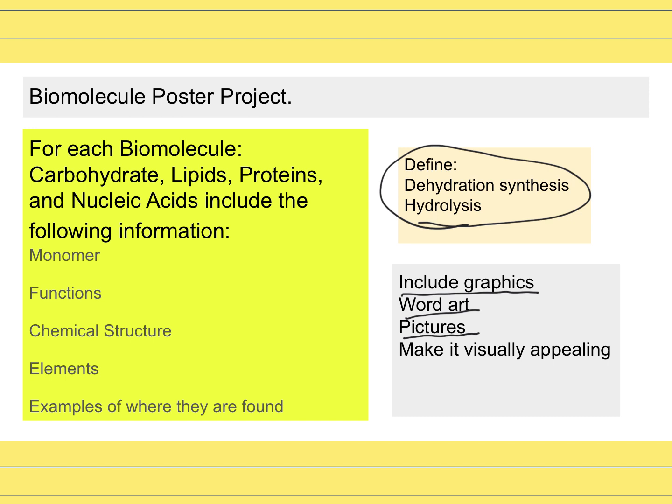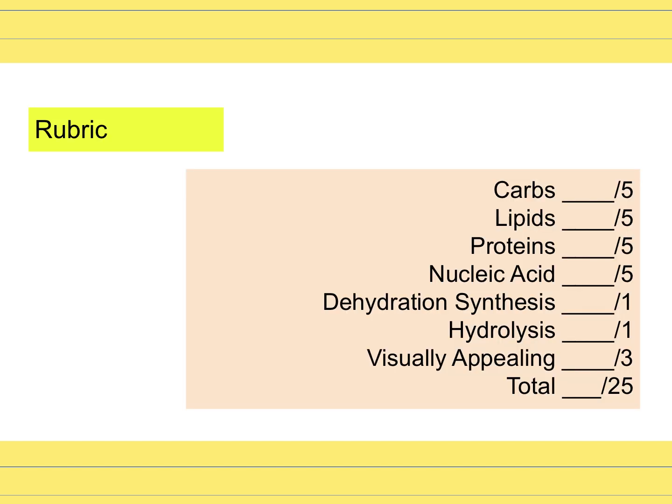You're going to be graded by the rubric on the next page. This will be a formative project. You'll get five points for having carbs, lipids, proteins, and nucleic acids, a point for dehydration synthesis defined, a point for hydrolysis defined, and then it needs to be visually appealing — for a total of 25 points.